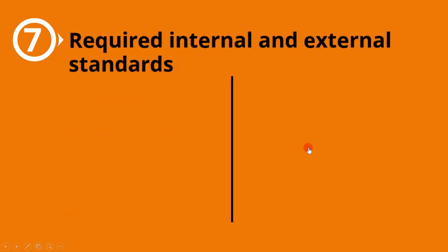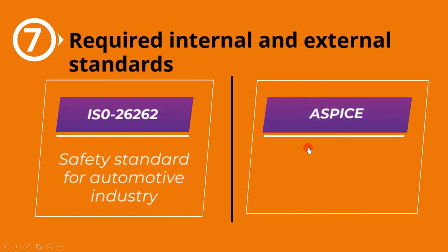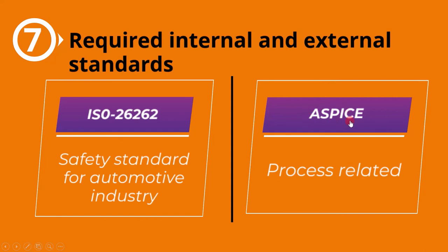The seventh and last context is required internal and external standards. ISO 26262 is a safety standard for the automotive industry — it is an external standard which organizations must follow if working in the automotive industry, and it must be included in the test process. ASPICE is another standard related to process; if an organization needs to comply with the ASPICE standard, they have to adapt their process accordingly.